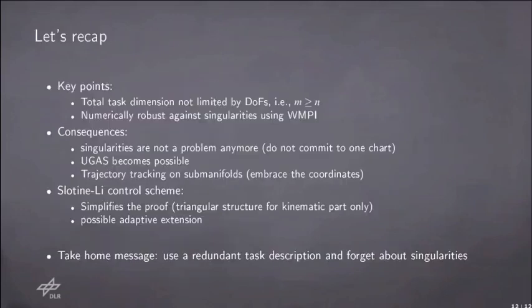So, to summarize, the key points are two. First, the fact that the total task dimension is now not limited anymore to be equal to the number of degrees of freedom of the robot. And secondly, the fact that by using weighted Moore-Penrose inverses, we can have a solution that is well behaved even in presence of singularities, but still retains all the property that we are used to have when we consider the inverse of the Jacobian matrix.